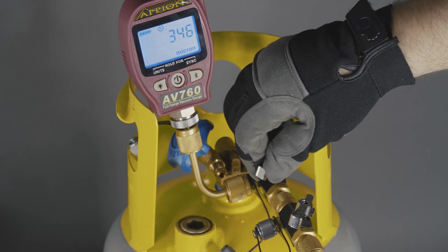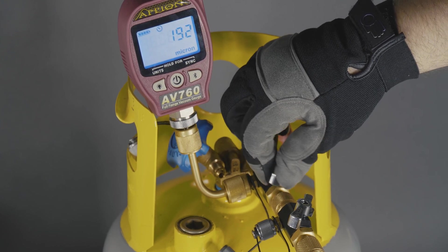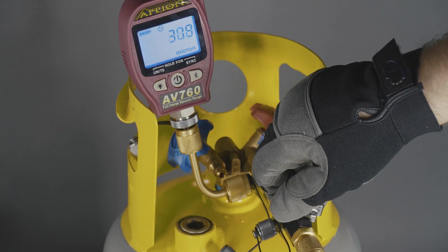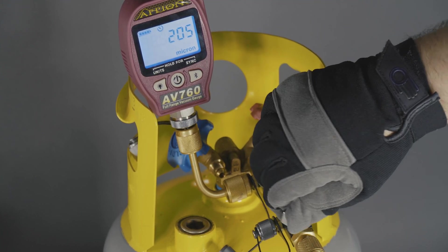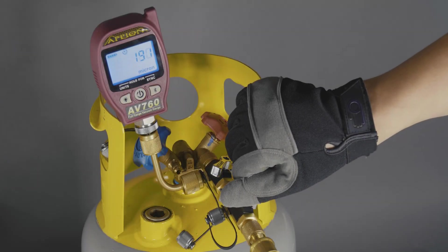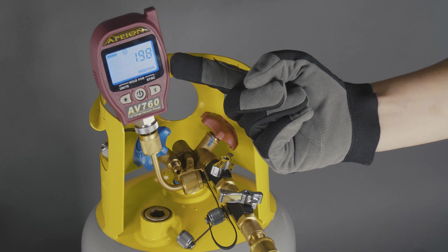This process will take a considerable amount of time and should not be rushed. The longer you perform this action, the more stable your rise will be. As you allow the vacuum to pull deeper, keep working the ball valve on the known good tool until the gauge reads under 200 microns with the ball valve closed.